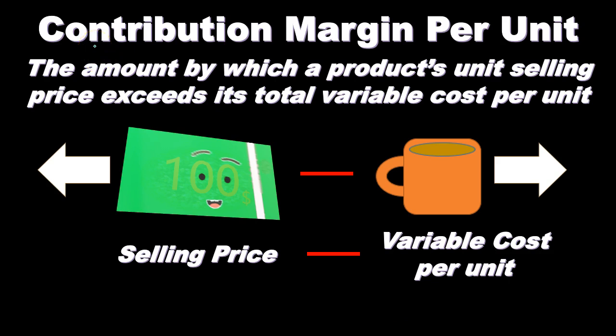Note that we've seen the contribution margin — not contribution margin per unit — when we looked at the contribution margin income statement, which was total revenue minus total variable costs. The contribution margin per unit is the building block that gets us there. We can break down the contribution margin income statement using the contribution margin per unit and number of units sold, or use it to project a future contribution margin income statement.